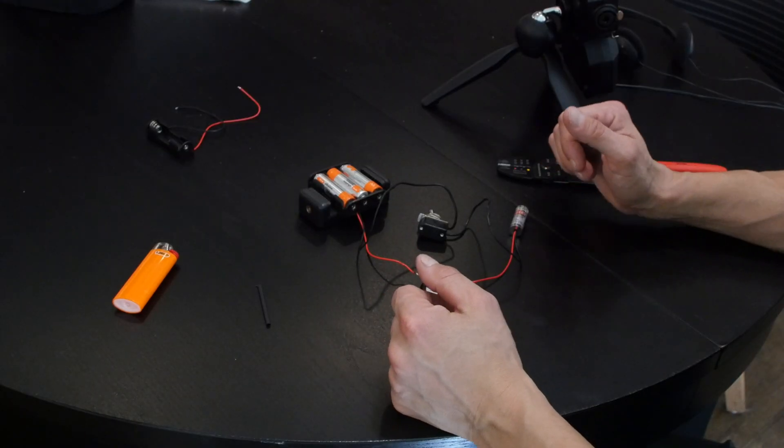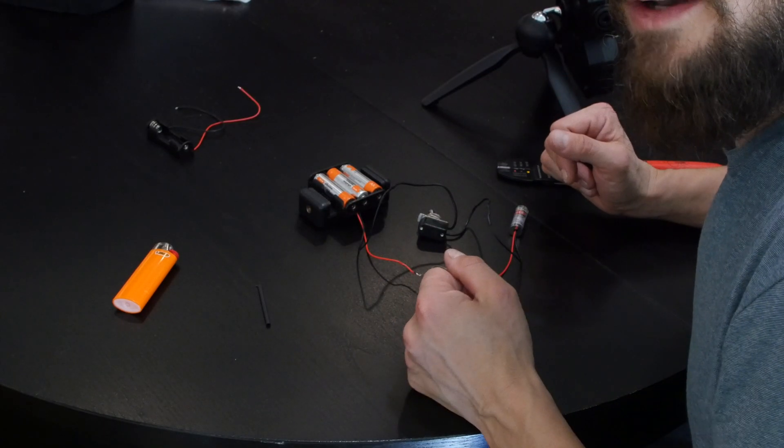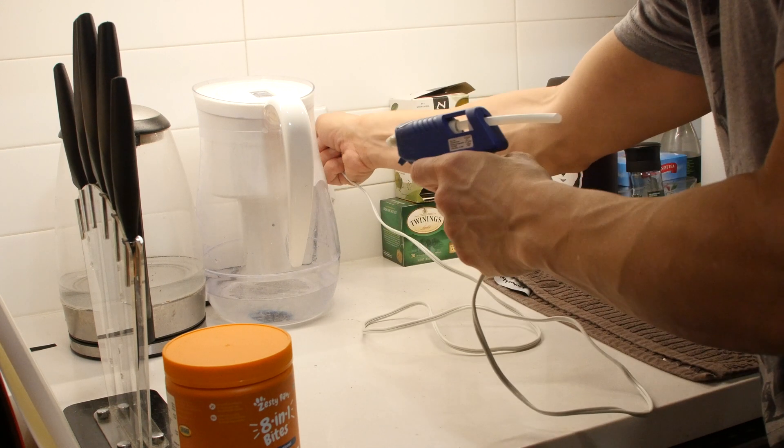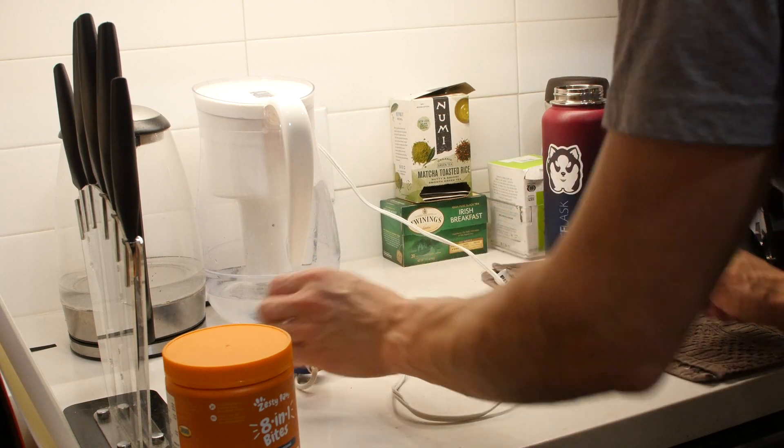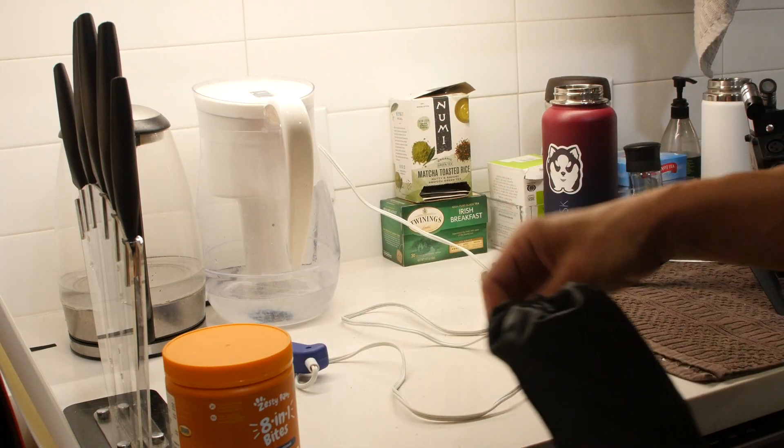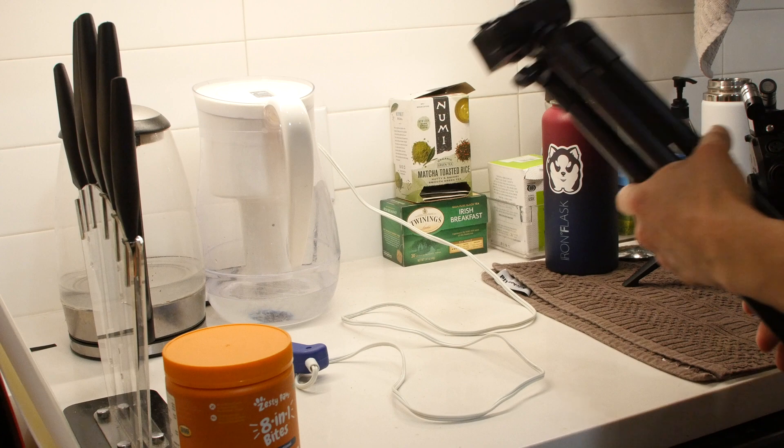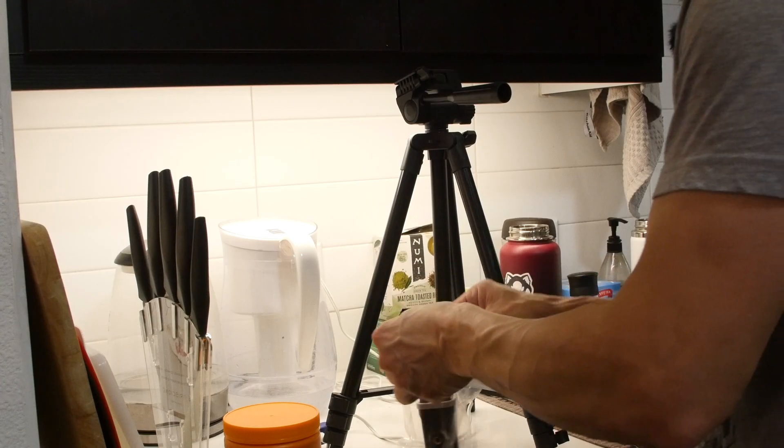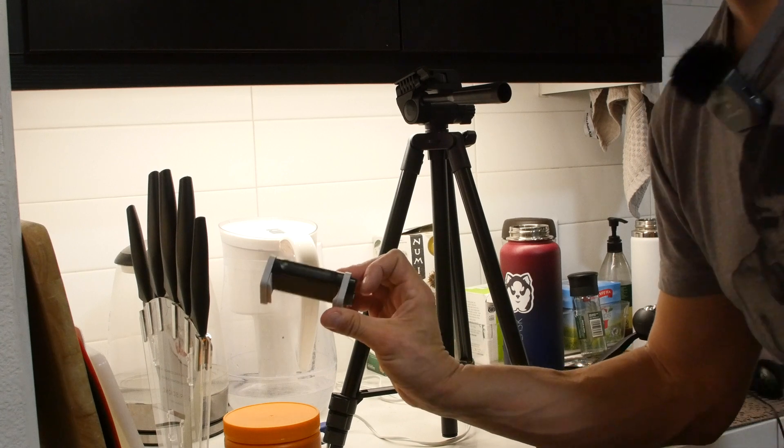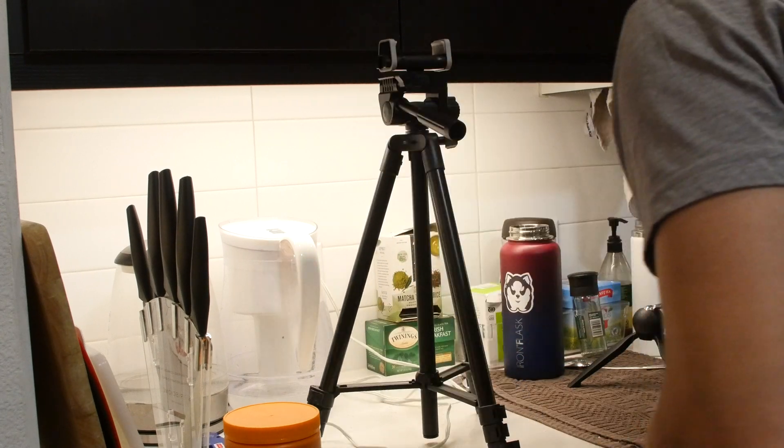And now all we got left is to connect it to the tripod. First of all, connect the glue gun, plug it in. It's going to take it about 5 minutes. In the meanwhile, we can open our tripod, simple tripod with an iPhone connection, iPhone holder. Make sure it's tight. Now we're going to bring our circuit. I'm actually going to cut the cables from the smaller battery holder.